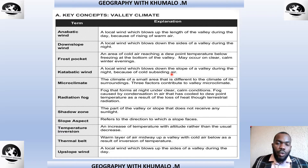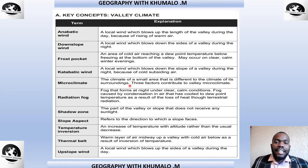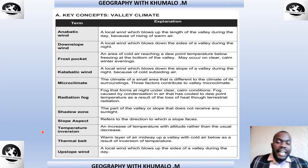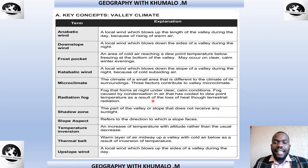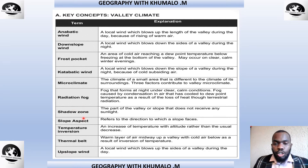Micro-climate is the climate of a small area that is different to the climate of its surroundings. Three factors contribute to valley micro-climates. Radiation fog is a fog that forms at night under clear, calm conditions. It is caused by condensation in air that has cooled to dew point temperature as a result of loss of heat through terrestrial radiation. Radiation fog is more like mist.